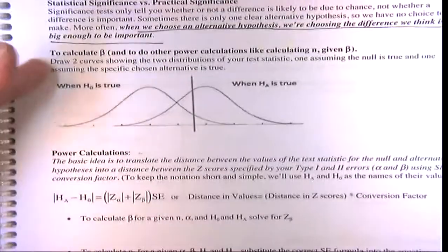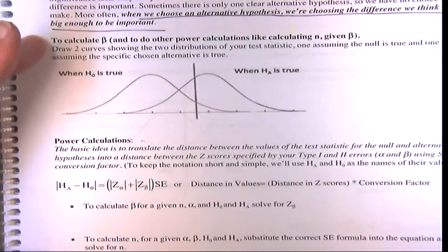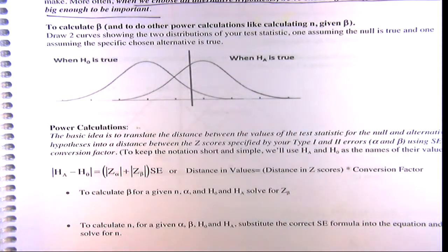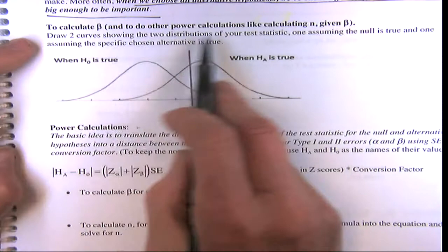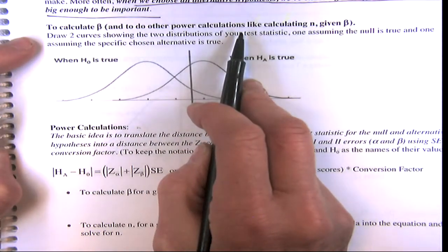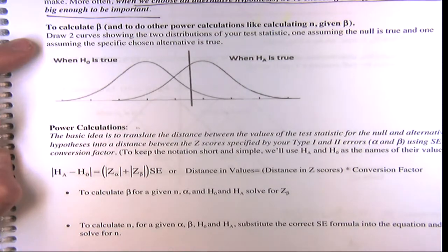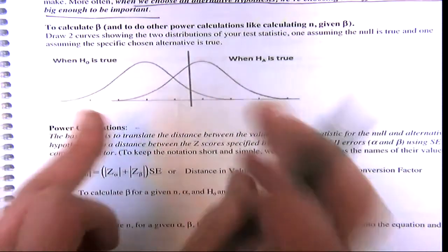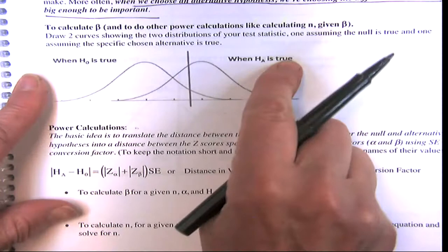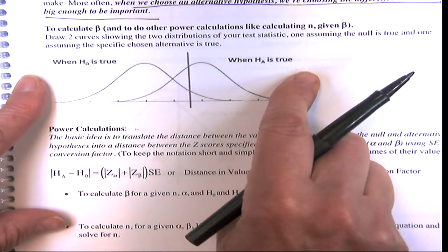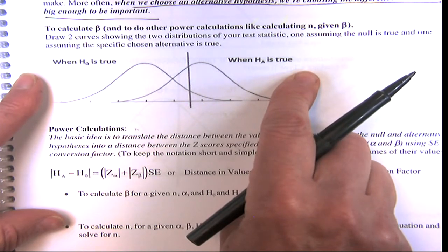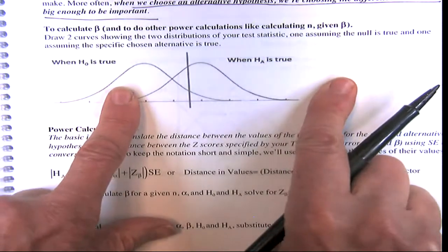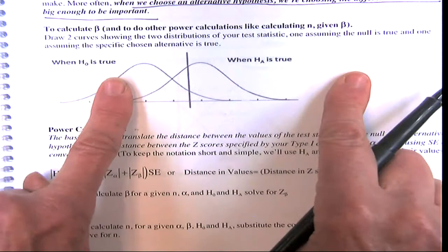More often when we choose an alternative, we're choosing the difference we think is big enough to be important to us. To calculate beta and do other power calculations — like calculating the sample size n needed to achieve a certain power — you have to draw two distributions: one when the null is true and one when your specified alternative is true.